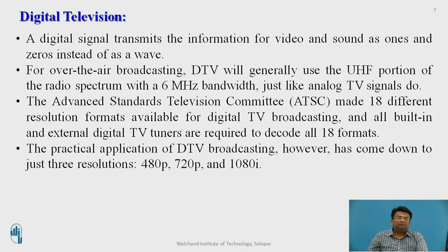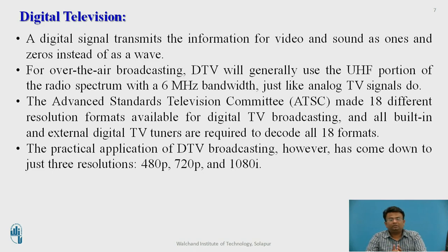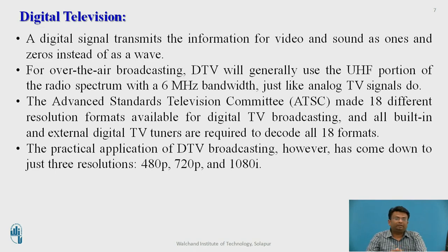In order to overcome these disadvantages, we have digital television. Digital means sending information in terms of ones and zeros instead of sending information as a wave. Broadcasting a DTV generally uses the UHF portion of the radio spectrum with a 6 MHz bandwidth, just like analog television.